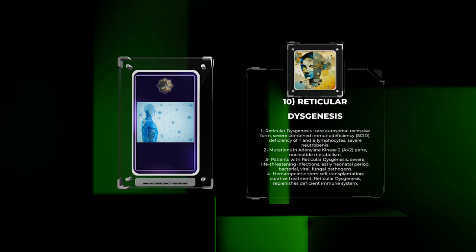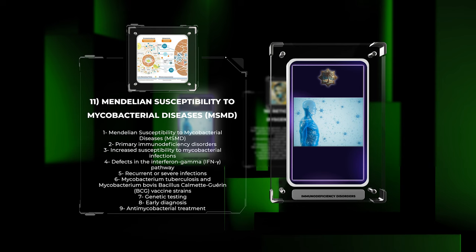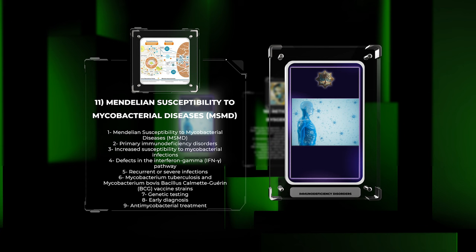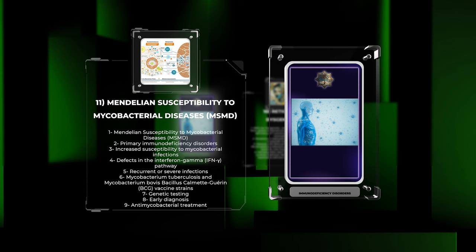Mendelian susceptibility to mycobacterial diseases (MSMD) encompasses a heterogeneous group of primary immunodeficiency disorders characterized by increased susceptibility to mycobacterial infections. MSMD arises due to defects in the interferon-gamma (IFN-γ) pathway, essential for controlling intracellular mycobacterial pathogens.